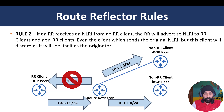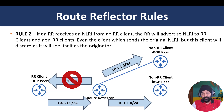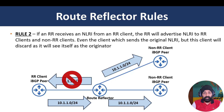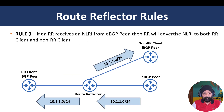The route sent back to the originating RR client gets discarded to prevent a routing loop. This discard happens because of the originator ID path attribute. The route reflector adds two additional path attributes to the NLRI: the cluster ID and the originator ID, which we'll cover shortly.